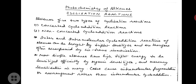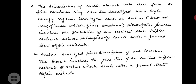Inter- and intramolecular cycloaddition reactions of alkenes can be brought about by a triplet sensitizer and are therefore often accompanied by cis-trans isomerization. Most simple alkenes have high triplet energy to be sensitized efficiently by organic sensitizers, and mercury sensitization in many cases causes intramolecular fragmentation or rearrangement rather than intermolecular cycloaddition. Dimerization of cyclic alkenes with three-, four-, or five-membered rings can be sensitized with high-energy organic sensitizers such as acetone.